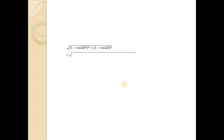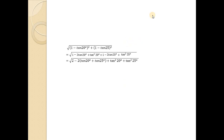Let's simplify and expand using the formula (a minus b)² = a² minus 2ab plus b². So (1 minus tan20°)² equals 1 minus 2·tan20° plus tan²20°, and (1 minus tan25°)² equals 1 minus 2·tan25° plus tan²25°. Adding: 1+1 equals 2, then minus 2·tan20° minus 2·tan25°, combining as minus 2(tan20° + tan25°), plus tan²20° plus tan²25°.